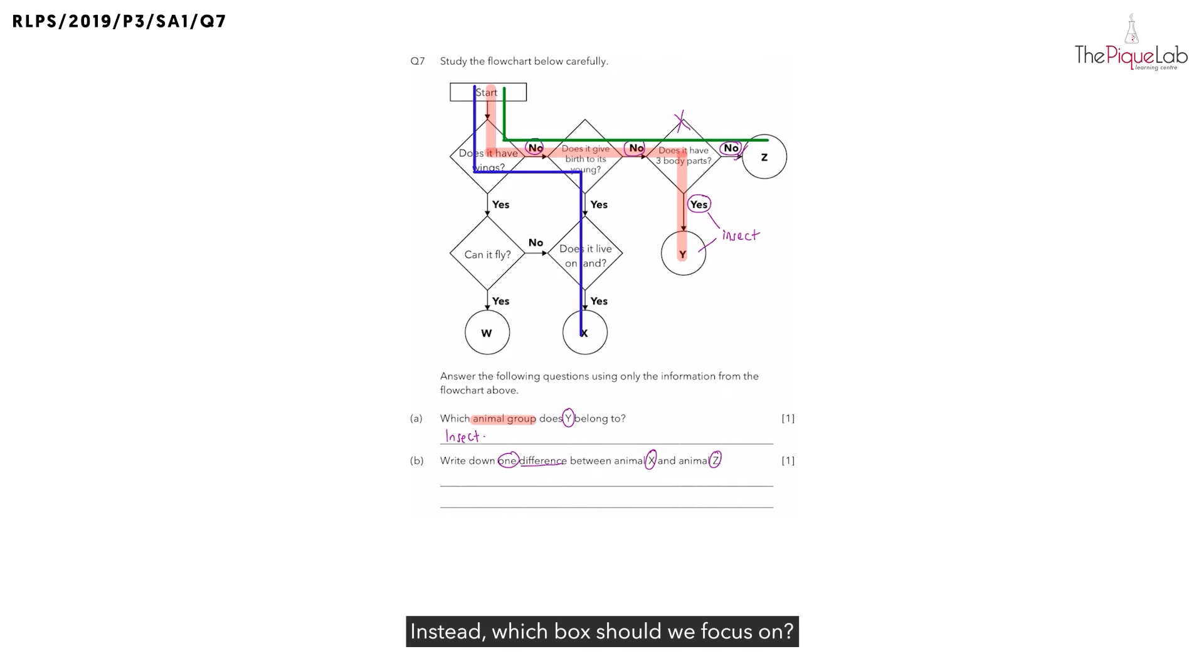Instead, which box should we focus on? Should we focus on the box where the lines are side by side just like this box, or should we focus on the box where the lines start to separate from each other just like the one I have circled out? To find the difference we should focus on the box where the lines separate from each other, and which characteristic is that? It is whether the animal gives birth to its young alive.